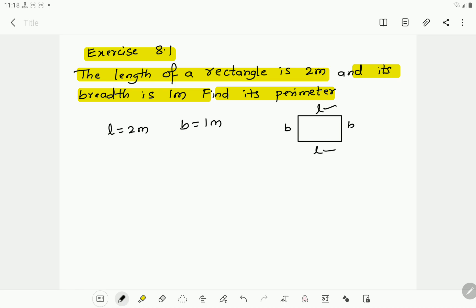Then you write the formula for the perimeter of a rectangle. You write perimeter of a rectangle equals 2 into L plus B. 2 into the sum of length and breadth. So you write 2 only and in the bracket, in the place of L you write the length that is 2 meters. So you write 2 plus, in the place of B you write 1.